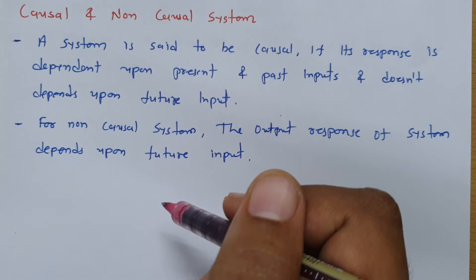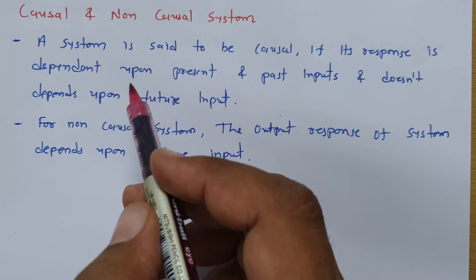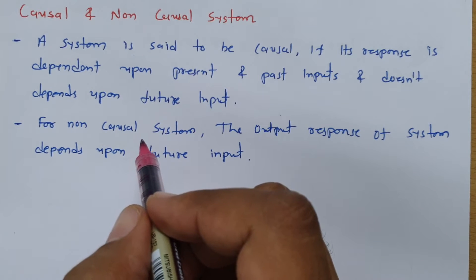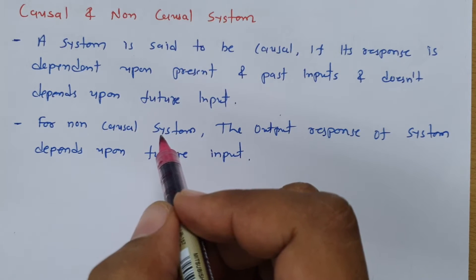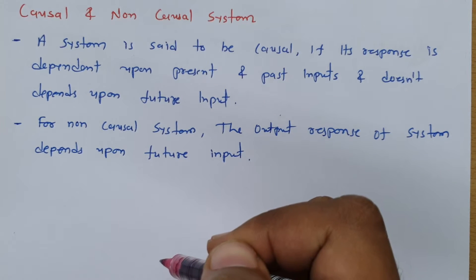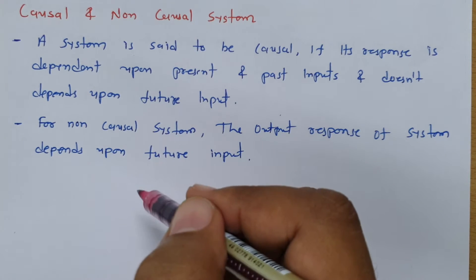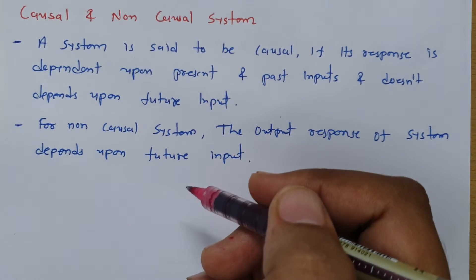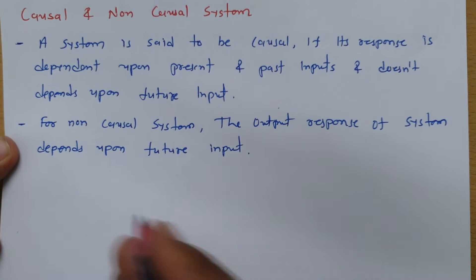So this is what we need to keep in mind. If the response of a system depends on present and past inputs, then the given system is causal. But if it depends on future input, then it will be a non-causal system. Let us try to understand this with some examples so it will be more clear.